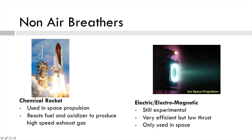For non-air breathers, we have the chemical rocket — everyone's seen a space shuttle; that's a chemical rocket. They're used mainly in space propulsion, as well as on missiles and similar vehicles. They react fuel and oxidizer to produce a high-speed exhaust gas. There are two types: solid and liquid rockets, which we'll go into in more detail later.